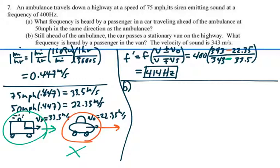Still have the ambulance. The car passes a stationary van on the highway. What frequency is heard by a passenger in the van? Alright, so in this case, our frequency is the frequency of the source times velocity of sound plus or minus the velocity of the observer over velocity of sound minus or plus the velocity of the source.